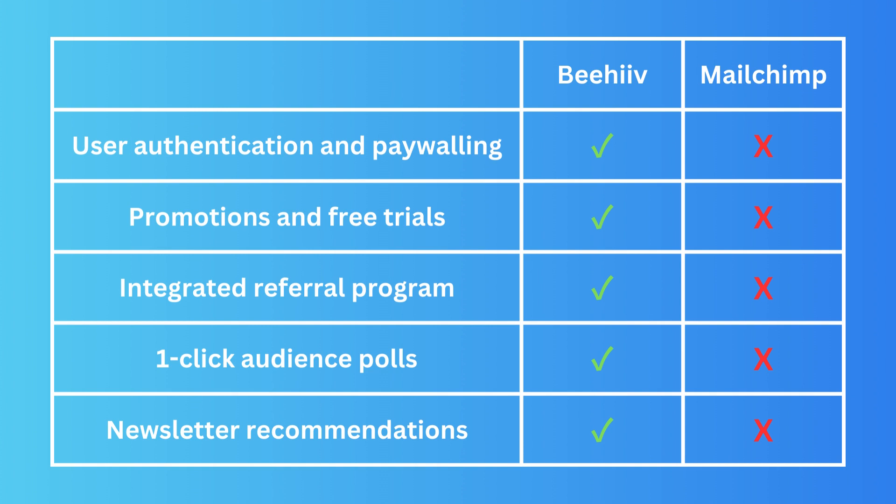Promotions and free trials are another area where the platforms differ. With Mailchimp, there is no free trial option. With Beehiiv, you can send emails for free and blog for free — it's very easy to get started at no cost. Also, Beehiiv has an integrated referral program where subscribers can refer others to your newsletter, which is not available in Mailchimp.